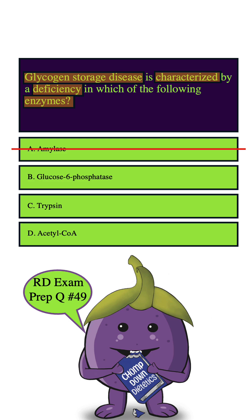How about C? Trypsin is an enzyme that breaks down proteins in the small intestine. It does not play a role in glycogen metabolism or glucose release, so we can safely eliminate this answer choice as well.